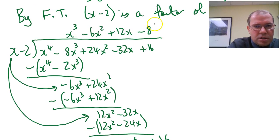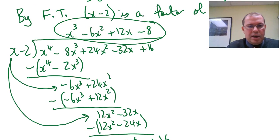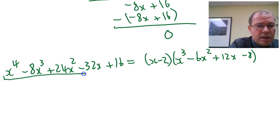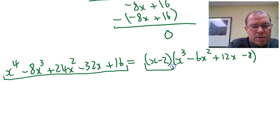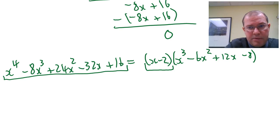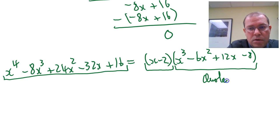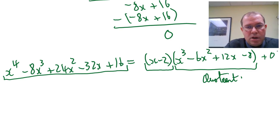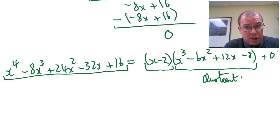The important thing is we now have the quotient x cubed minus 6x squared plus 12x minus 8. So this is what we know so far: we're trying to factor this degree 4 polynomial. We knew x minus 2 was a factor, and when we did the division we got the quotient x cubed minus 6x squared plus 12x minus 8. So we know the degree 4 polynomial equals x minus 2 times the quotient plus remainder 0. Of course, what we have to do now is look at this cubic and consider whether it factors, because we may not have fully factored it — and in this case, we have not.